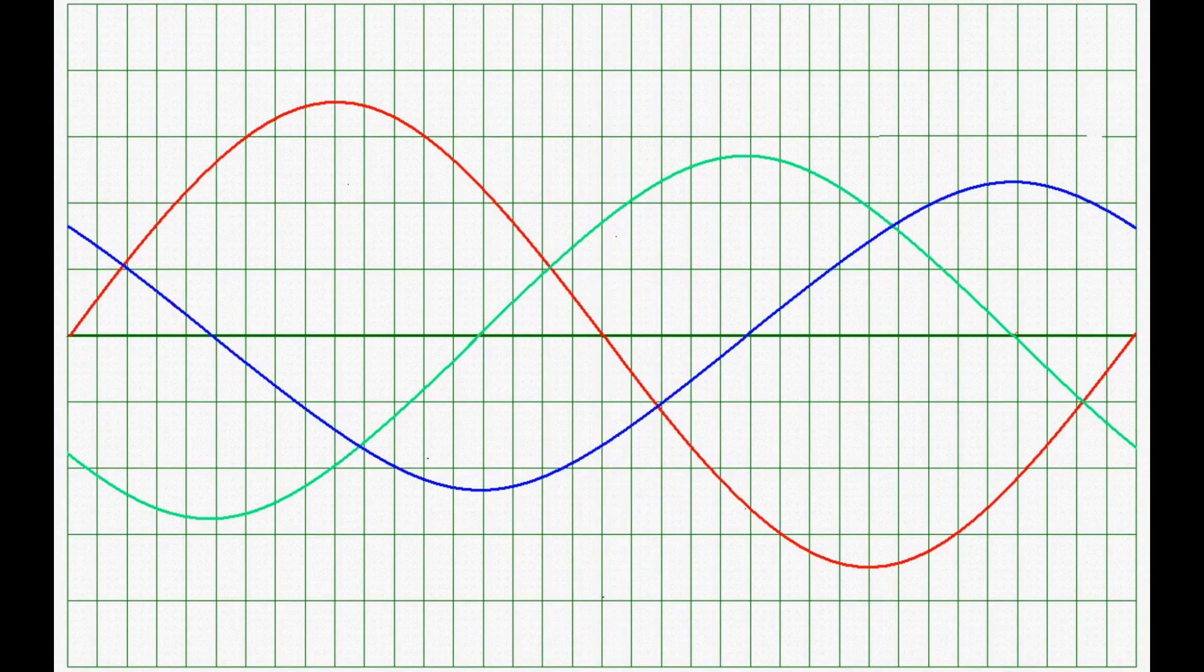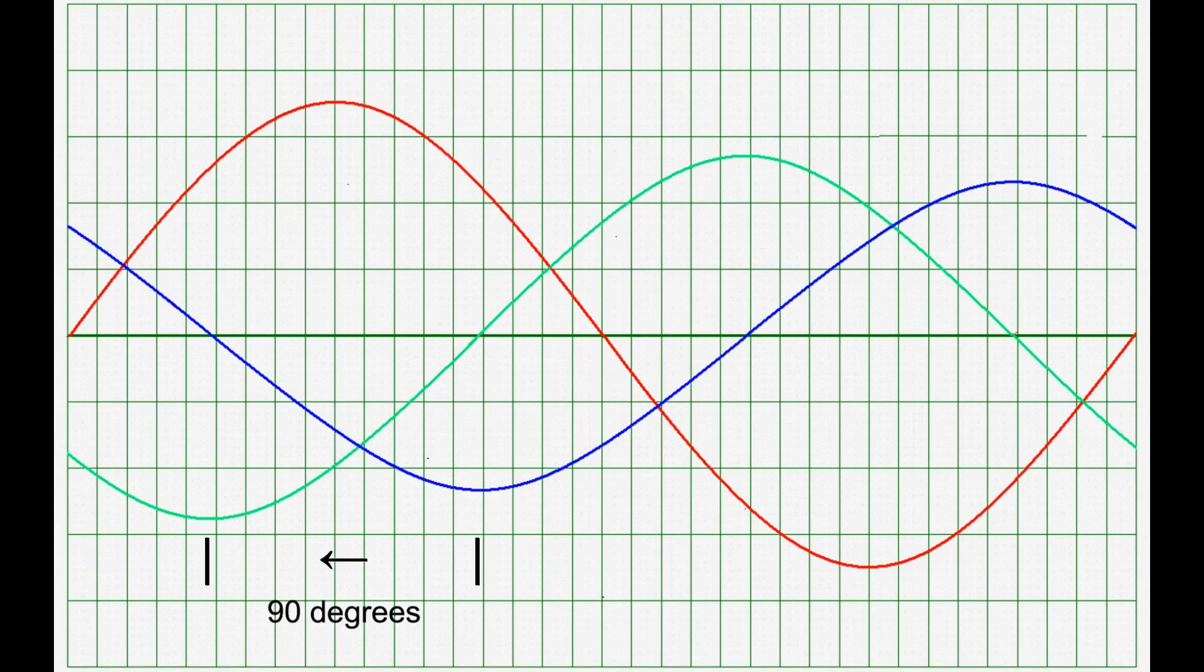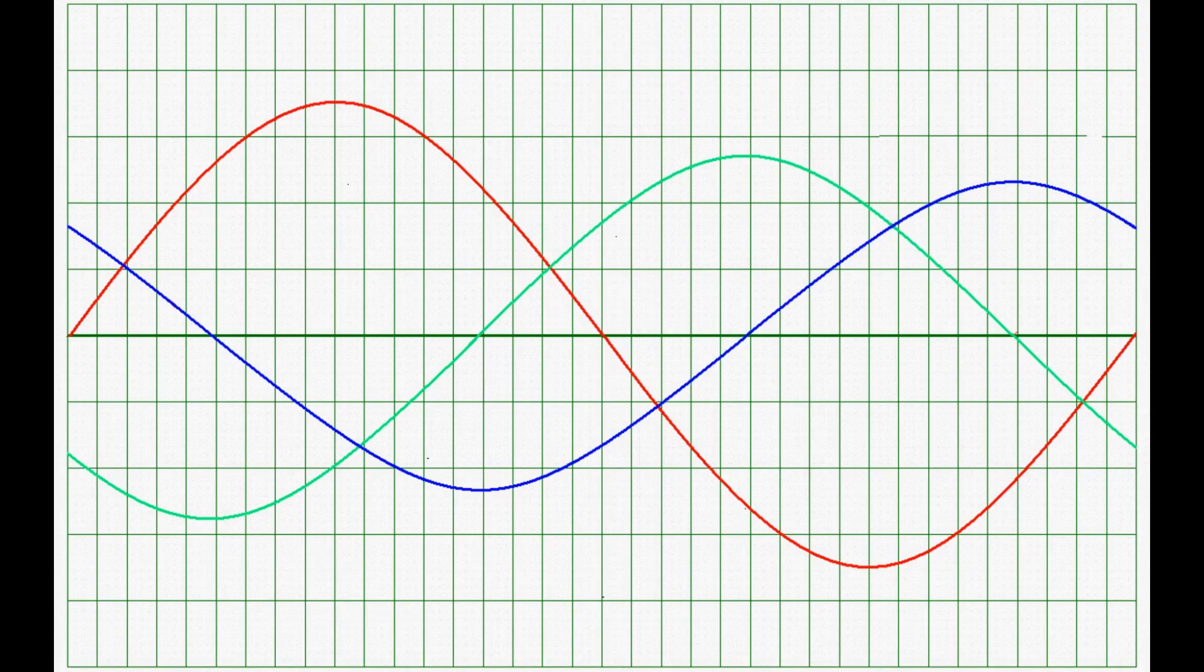The current leads the capacitor voltage by 90 degrees. Since the current and the resistor voltage are in phase, they peak at the same time, the resistor voltage is also 90 degrees ahead of the capacitor voltage. So here we have all the voltages plotted out, showing their relationships to each other.